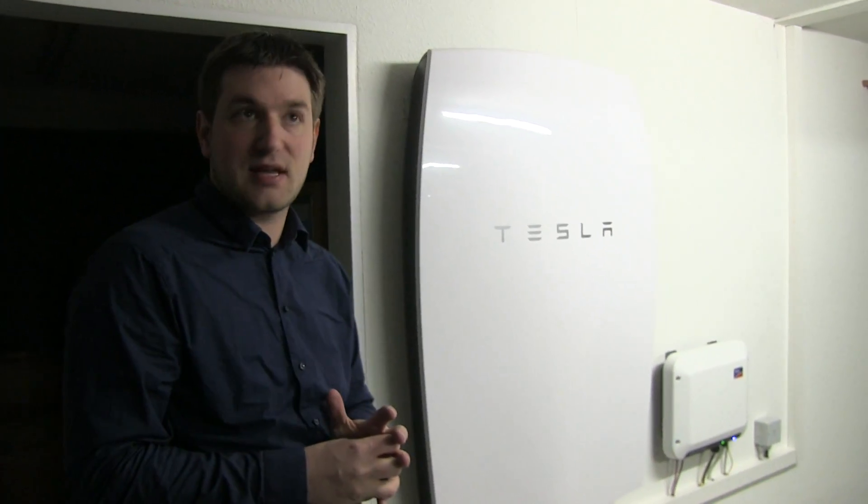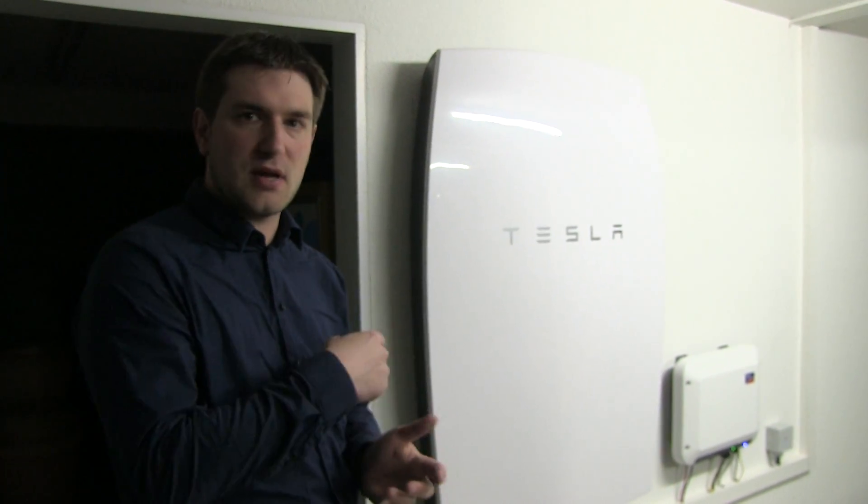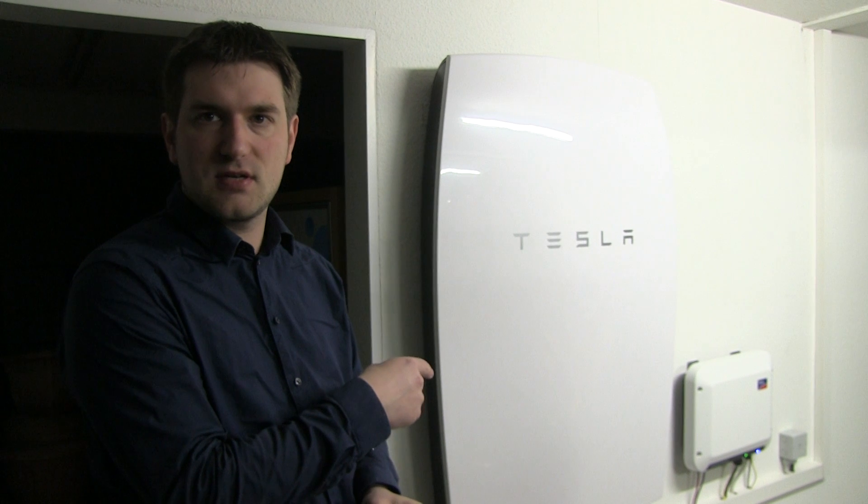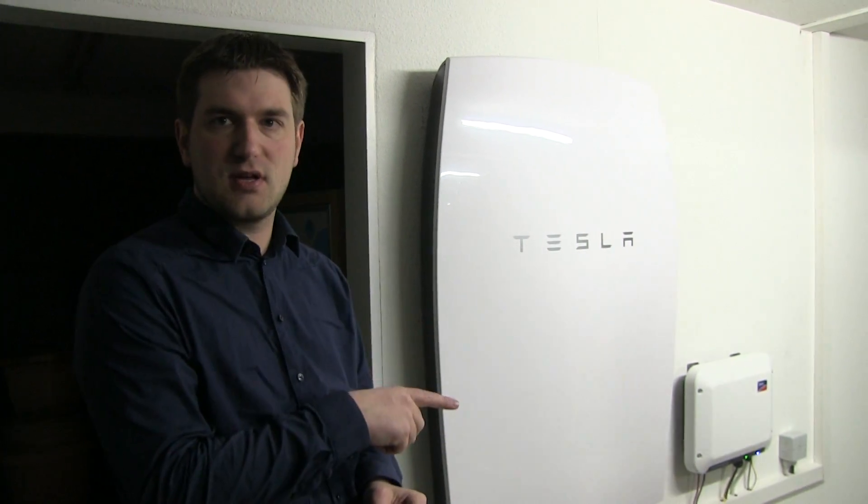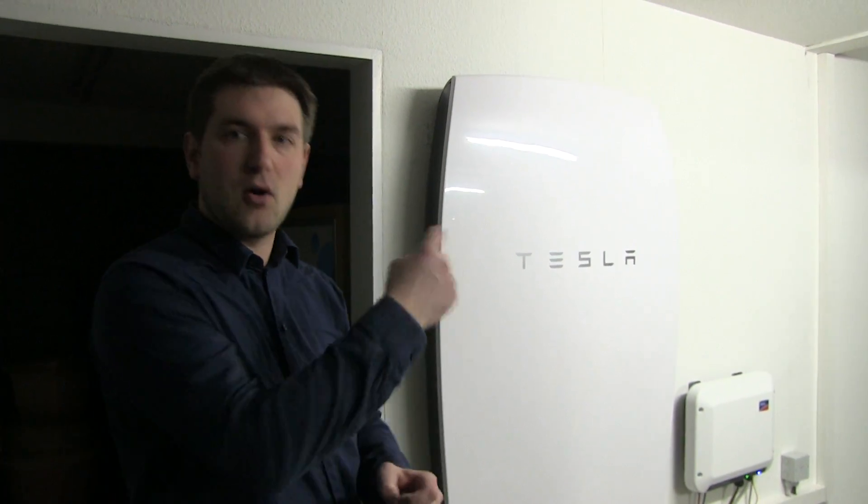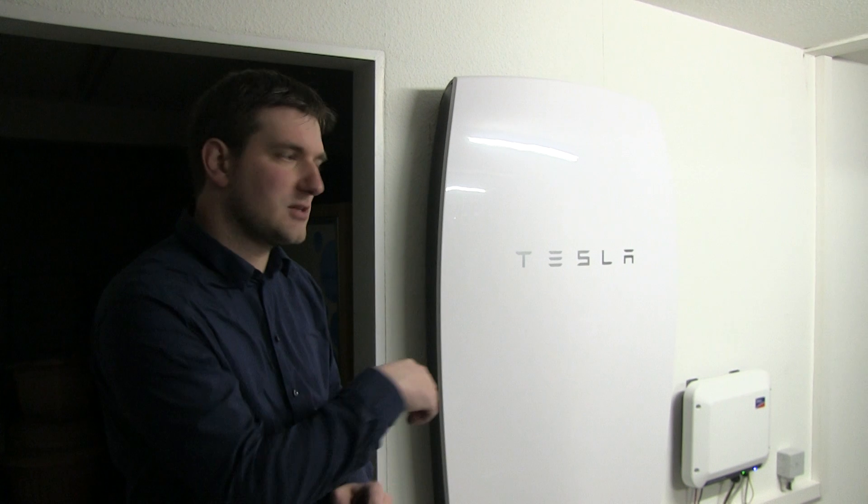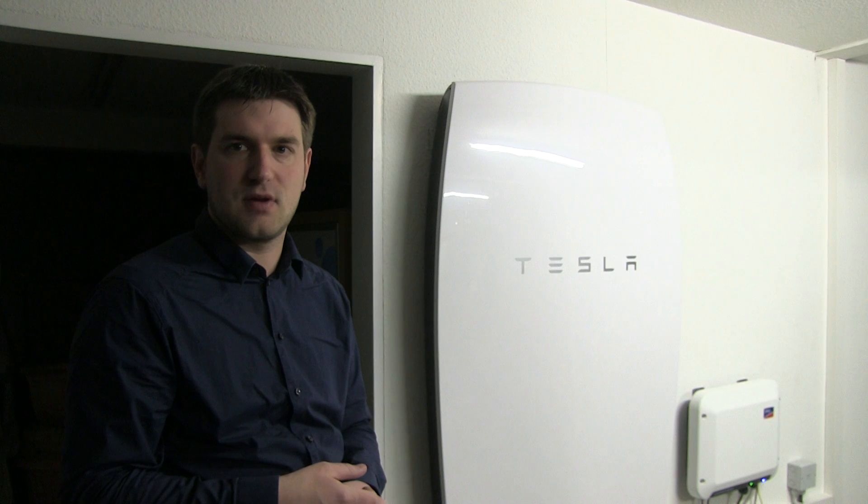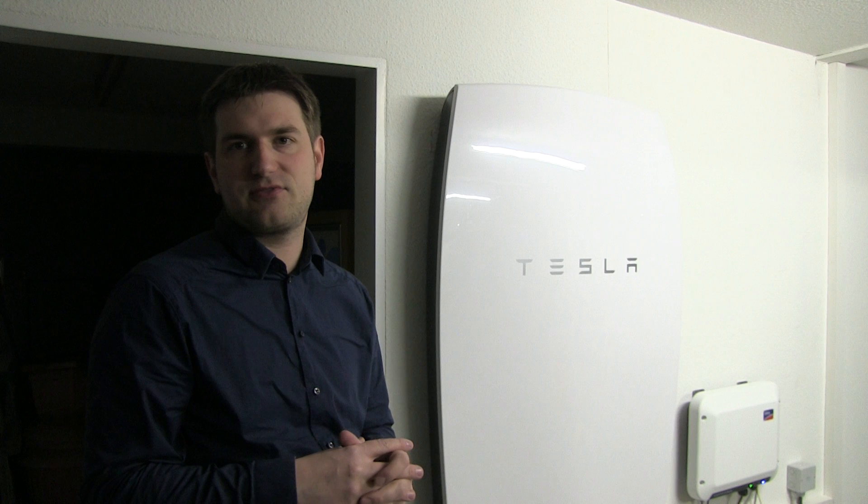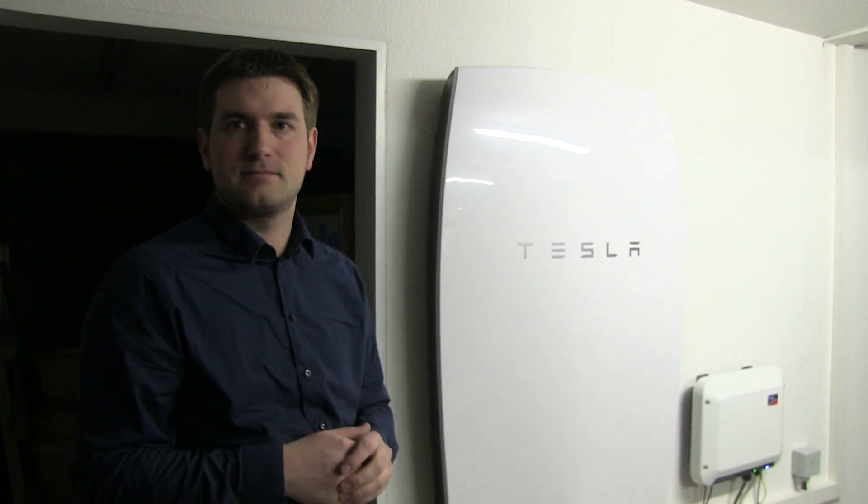And what is the difference between Powerwall 1 and 2? The most different is the capacity. The Powerwall 1 has 6.4 kilowatt hours. The Powerwall 2 will have 13.2 kilowatt hours. The power is different. I have 2.5 kilowatt input and output and the Powerwall 2 will have 5. But in the German regulations you're only allowed to use 4.6. Regulations, one phase, three phase, you don't have too much power on one phase.